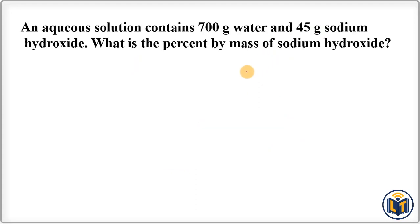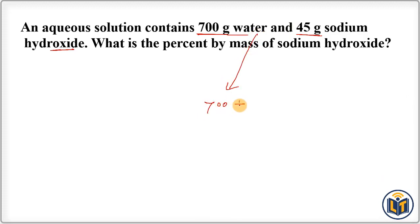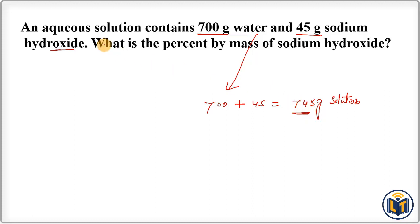The last problem states: an aqueous solution contains 700 grams of water (solvent) and 45 grams of sodium hydroxide (solute). From this data we can calculate the total mass of solution by adding these values: 700 + 45 = 745 grams. This is the total mass of the solution.